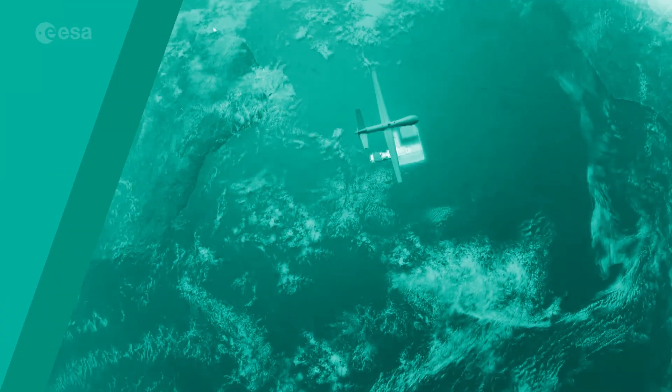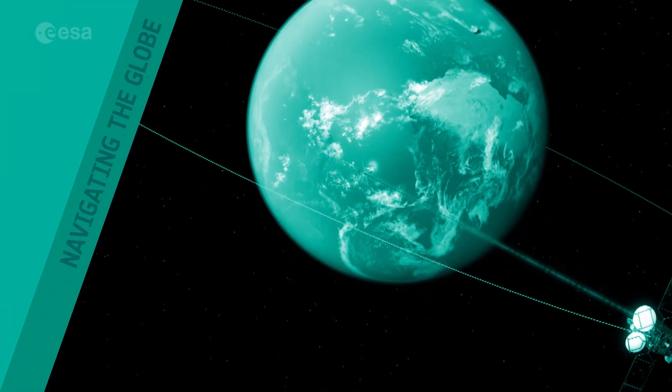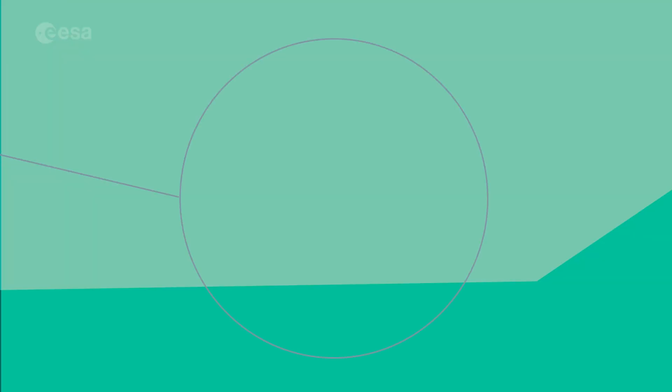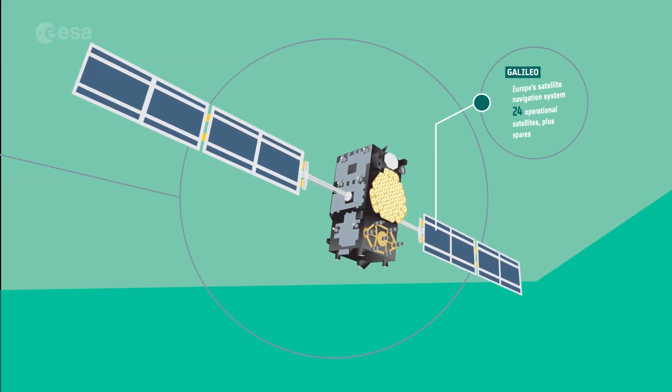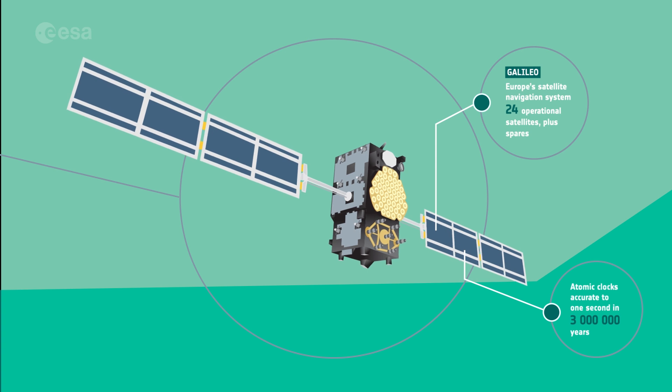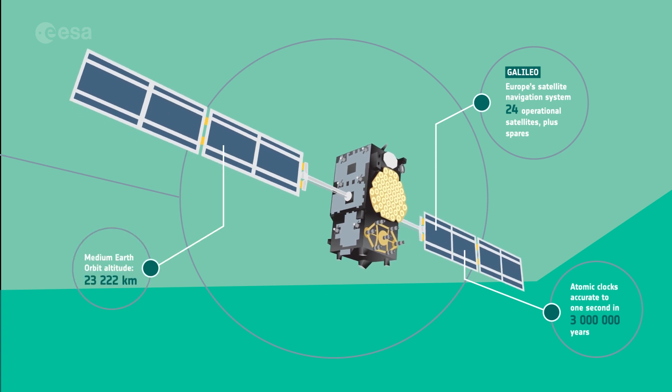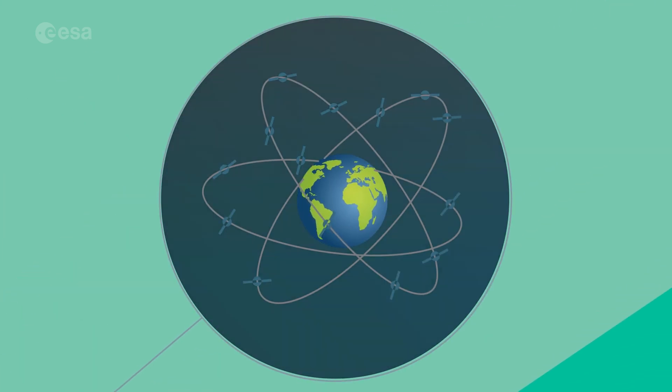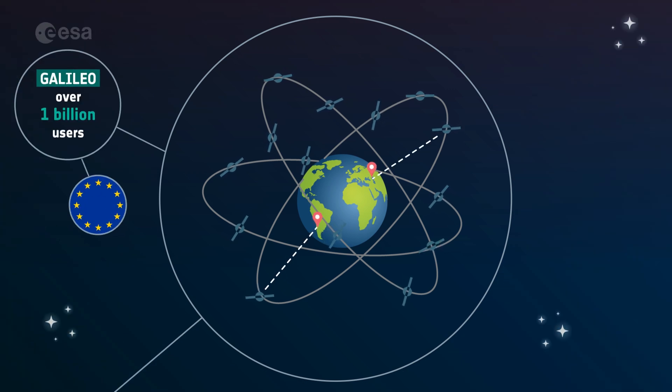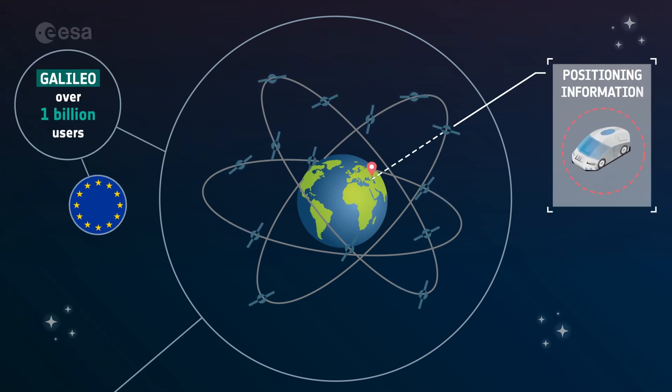Satellites also help you find where you are and get you where you want to go. We have developed Galileo, Europe's own global satellite system for navigating the globe. With over 20 satellites and a network of ground stations, Galileo provides precise global positioning information.